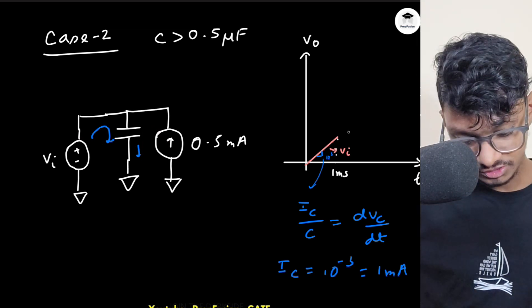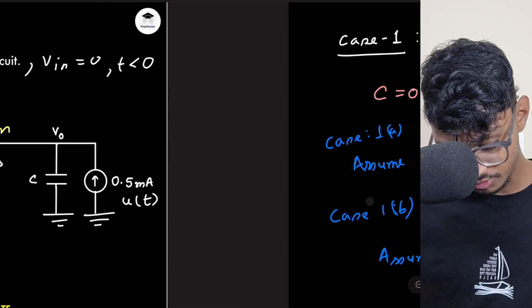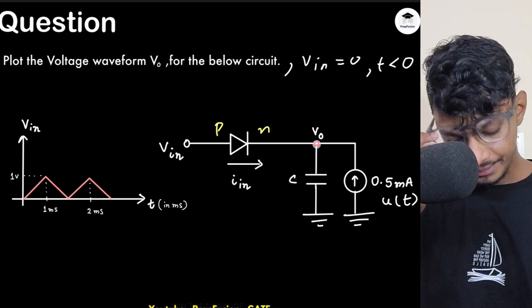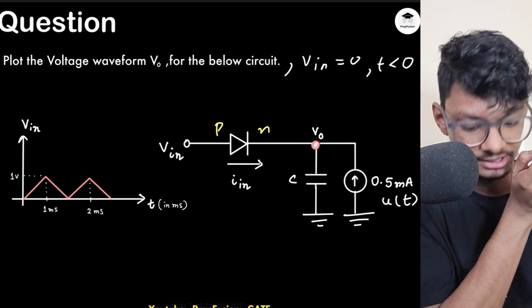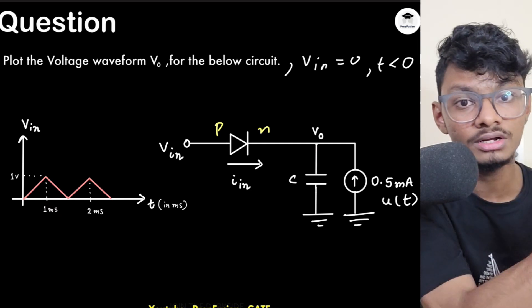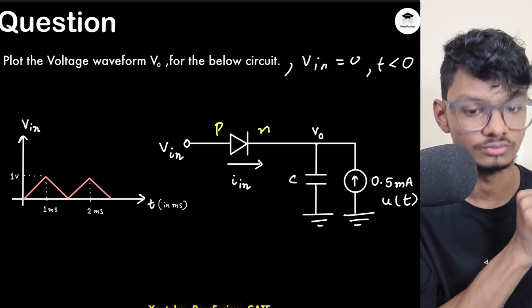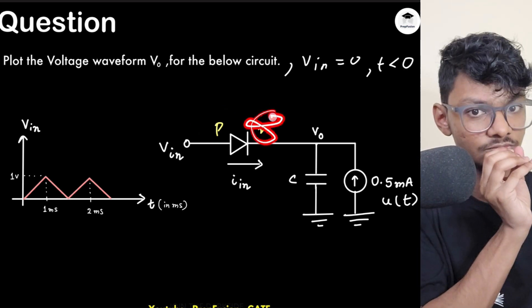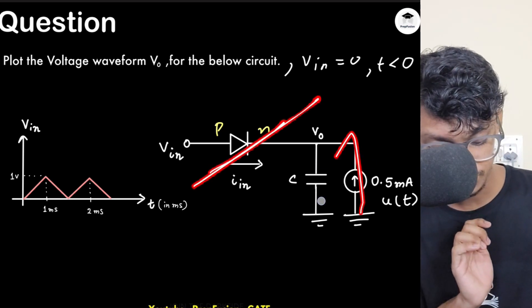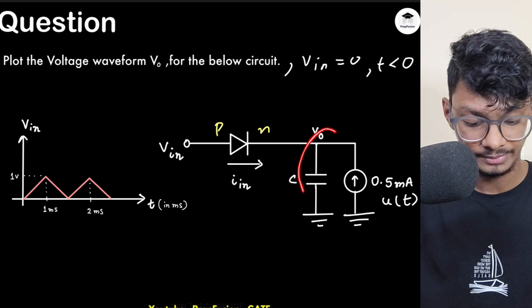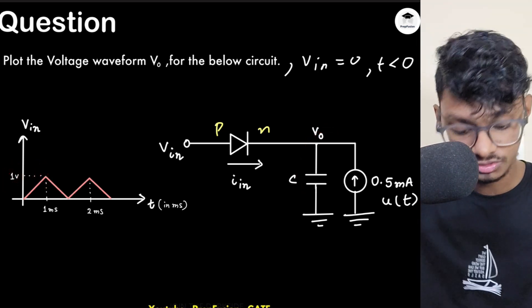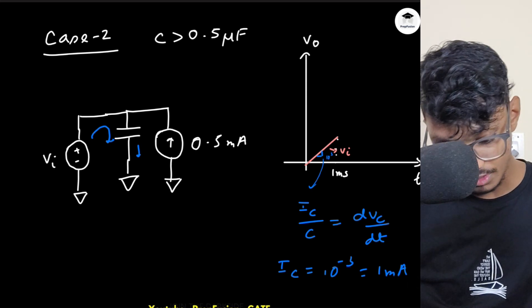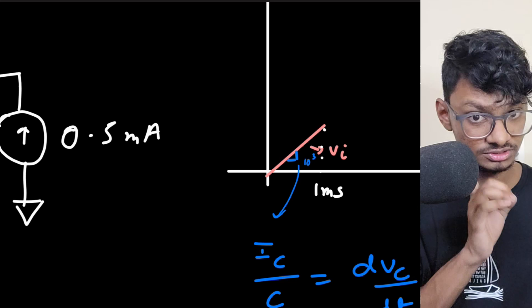After t = 1ms the input voltage keeps reducing. The capacitor tries to hold its voltage. At t = 1ms+, the p-side voltage drops slightly while the n-side is still fixed, so the diode turns off. Once the diode turns off, the current source starts charging the capacitor again from 1V linearly upward.